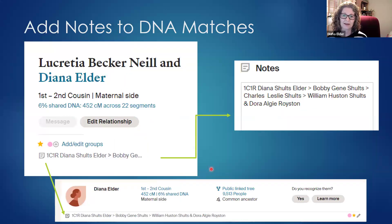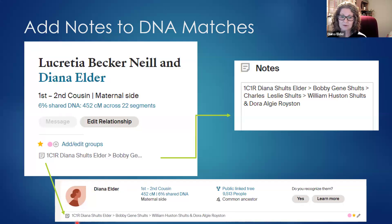Once you have diagrammed and know how someone is connected to your test taker, add that to your notes on the testing company website. For instance, I've added a note that I am Lucretia's first cousin once removed with the line back to our common ancestral couple. On Ancestry, this note appears right on the main matches page, so as you're creating your Leeds chart, you'll immediately know not to include that person.